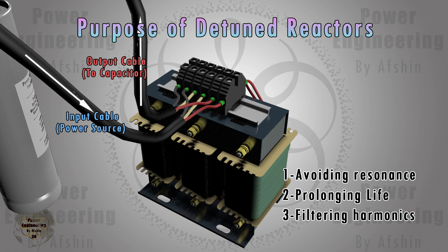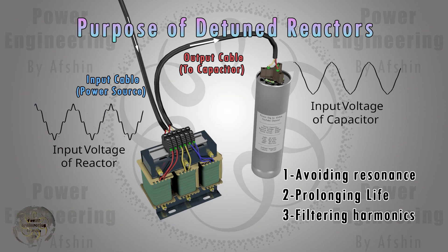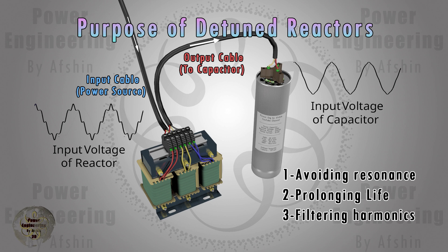By avoiding resonance, detuned reactors protect capacitor banks from being exposed to high harmonic currents, which can lead to overheating, reduced lifespan, and potential failure of the capacitors. While detuned reactors are not primarily designed to filter harmonics, they can reduce the flow of harmonic currents through the capacitor banks, contributing to overall harmonic mitigation in the system.